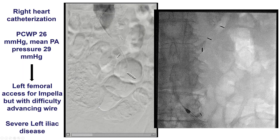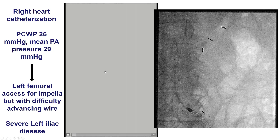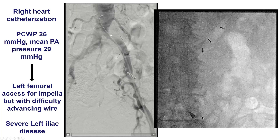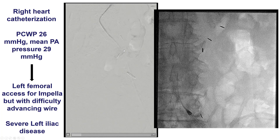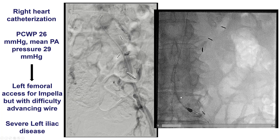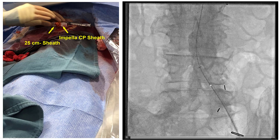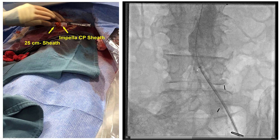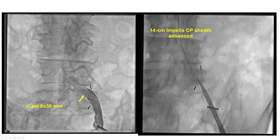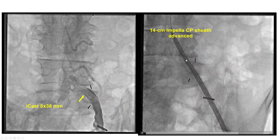Given the significant risk with three-vessel CTO and low ejection fraction, we decided to use prophylactic support with an Impella device. Moreover, the wedge was 26. However, the patient did have significant left iliac disease, and we were unable to advance the Impella past that left common iliac artery. As a result, with the help of the vascular surgeons, we placed a covered stent — an ICAST 8x38 mm stent — and after that, we were able to advance the Impella sheath through the stent.